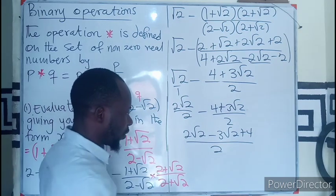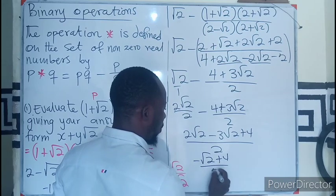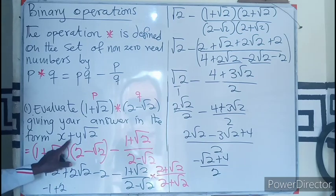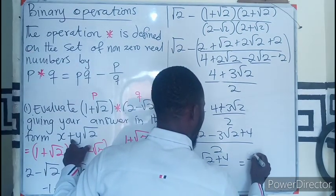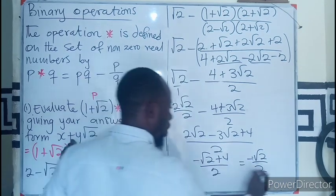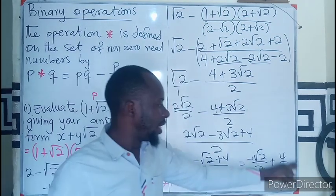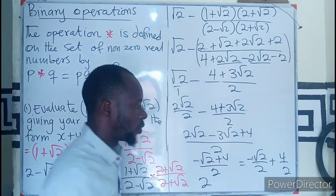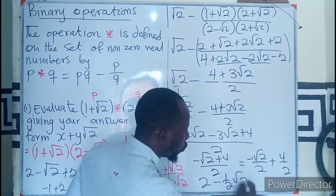Combining the root two terms: two minus three gives minus one, so we have minus root two plus four, all over two. The question asks for the answer in separated form, so this becomes four over two minus one root two over two, which simplifies to two minus one-half root two.